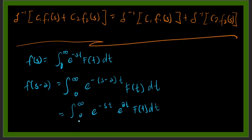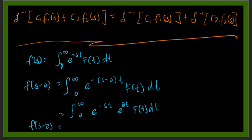Looking closely at this expression, we know that the Laplace of F(s) equals f of t. The part inside the integral corresponds to F(s), so we can say that F(s minus a) is equal to F(s) evaluated with the e to the at factor — meaning F(s minus a) corresponds to e to the at times f of t.